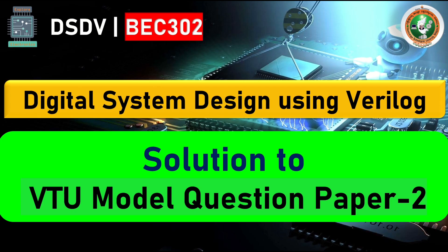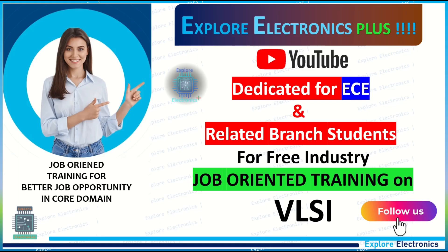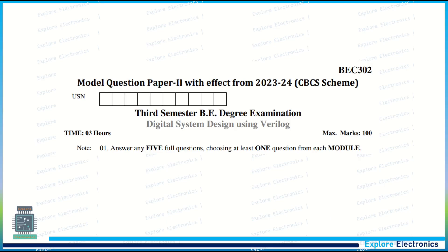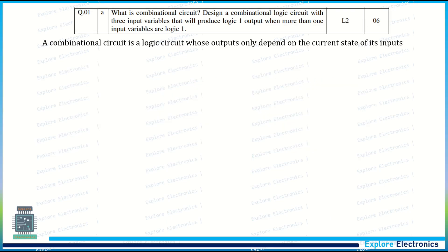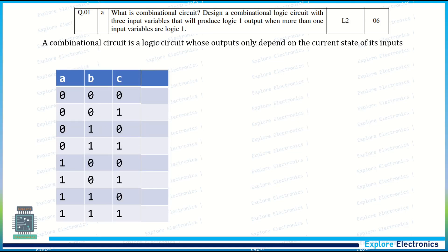Hey guys, welcome back to Explore Electronics. Let us see the solution for the second model question paper of DS/DV subject. The first question: what is combinational circuit design? Design a combinational circuit with three input variables that will produce logic one output when more than one input variable is logic one. First, write the definition for combinational circuit.